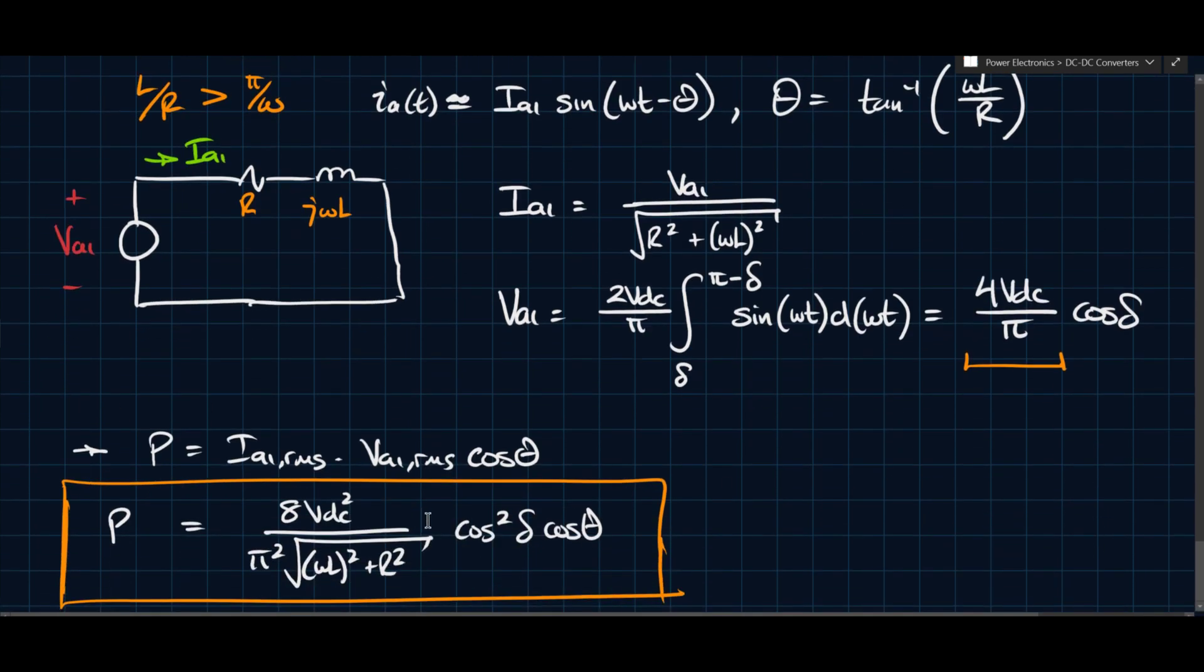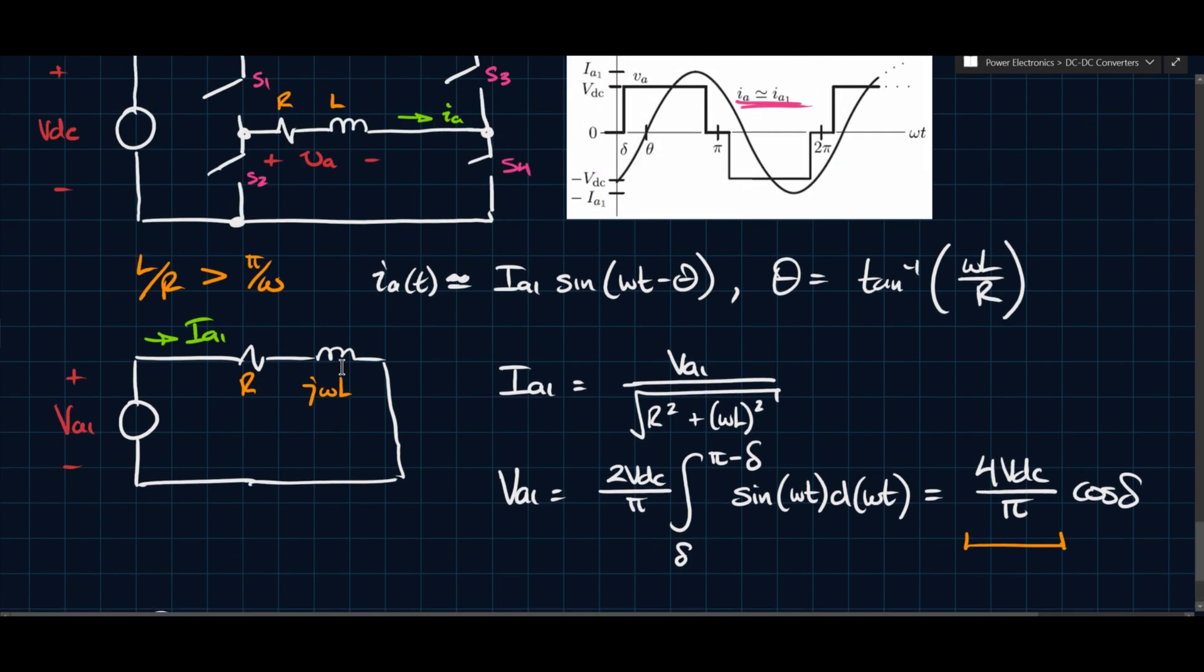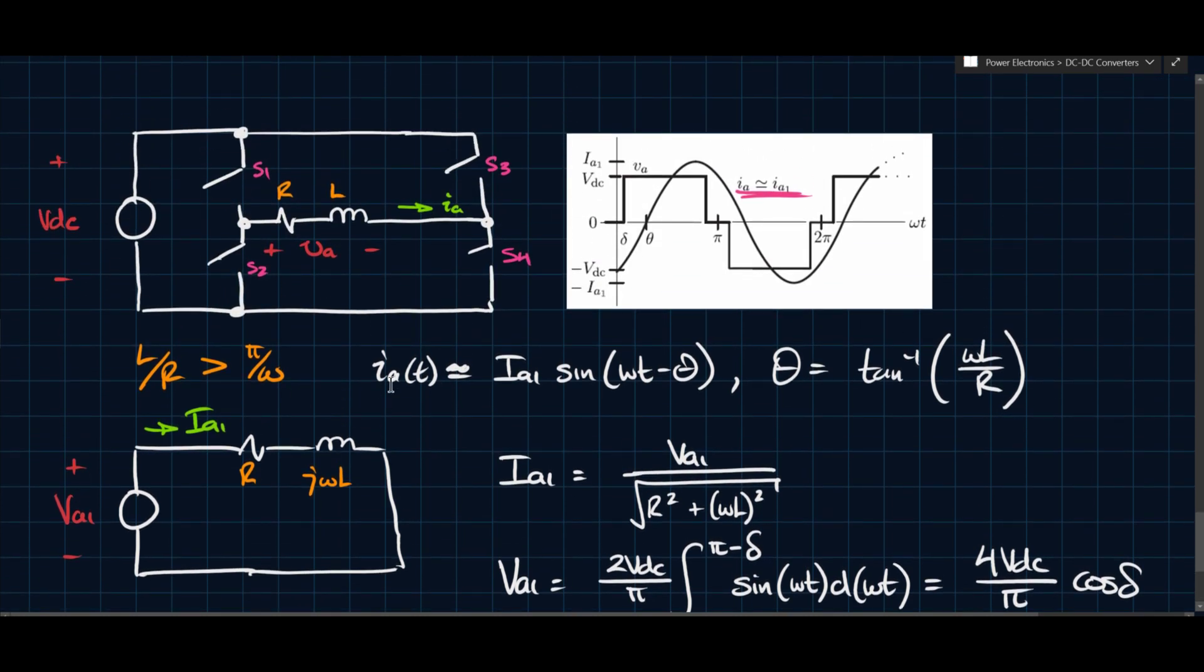We see that if we want to control the amount of power we deliver to this load, we can't control theta because this is a passive load. What that means is once you have your inductor and you have your resistor, you can't control the inductance and the resistance of those components. So what you end up having to do is if you want to play with the power that you're sending or you want to control the power, you want to increase or decrease, you're basically limited to delta in this configuration. Again, you could change VDC, but we're not looking at that case. We're looking at if I have just this thing as a standalone.